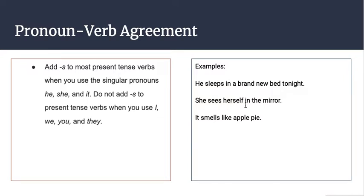She sees herself in the mirror. Here we have the pronoun she, the verb is see, but because we only have one she, we're going to add that -s to make the pronoun and the verb agree. It smells like apple pie—sounds delicious. If we have it, and what is it doing? It smells. We have to add that -s because there's it in front of it.